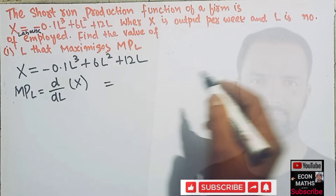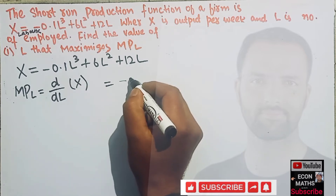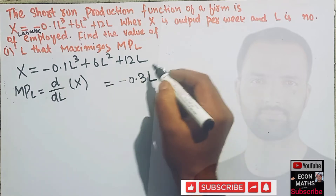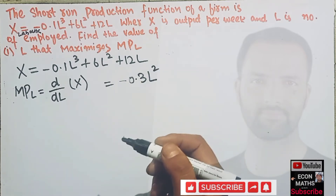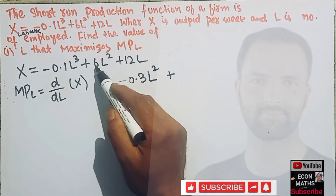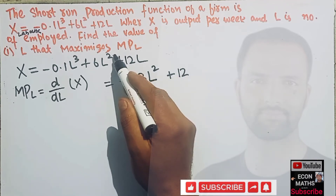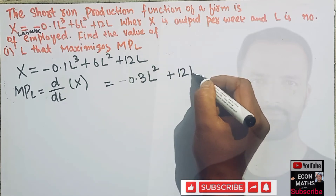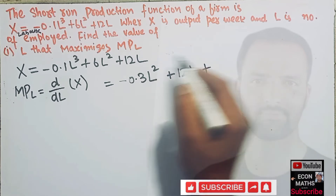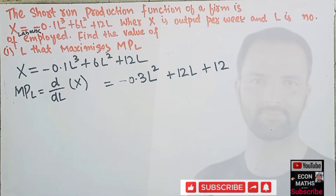So what is the derivative of this function? By the power function rule, 3 times minus 0.1 gives minus 0.3L squared. Then 2 times 6 gives 12L to the power 1. Plus the derivative of 2L is 2. So our marginal product of labor is: MPL equals minus 0.3L squared plus 12L plus 2.